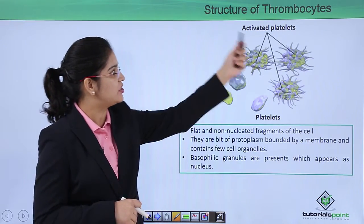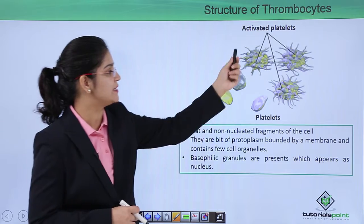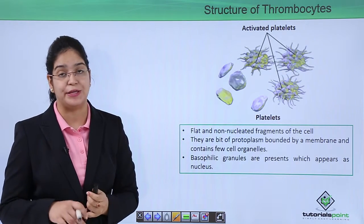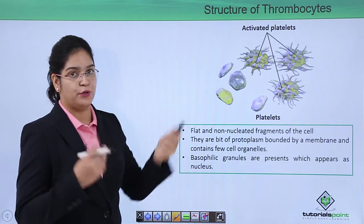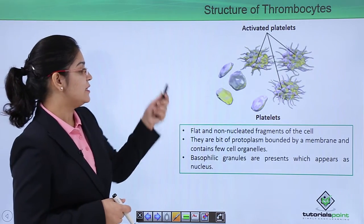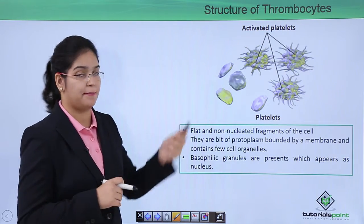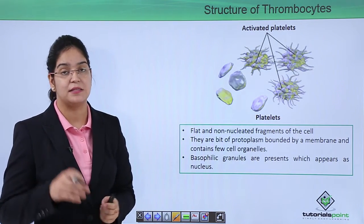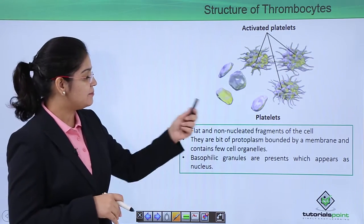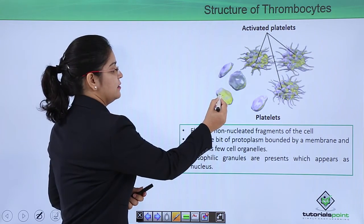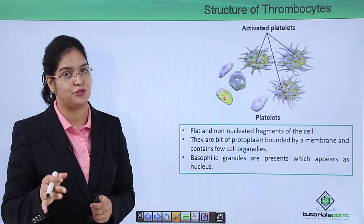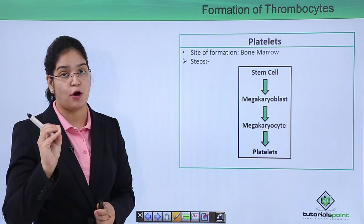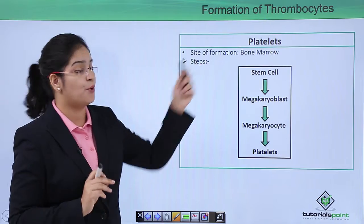Generally thrombocytes have a flat shape, but at the time of injury they change their shape into activated platelets, where you can see fibers in their structure. They are flat and non-nucleated — they do not have any nucleus. They are fragments of megakaryocytes, consisting of bits of cytoplasm bounded by a membrane. They contain only a few cell organelles and basophilic granules, which take a basic dye. These granules may appear like a nucleus, but platelets do not actually have a nucleus.